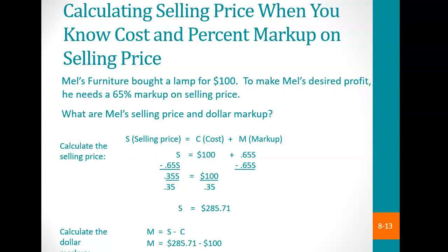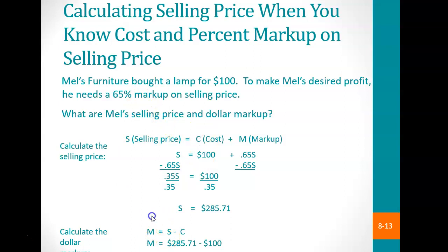The markup would be the selling price minus the cost. Taking the sales price minus the cost of $100, the markup on the lamp would be $185.71. This means you're paying a price much higher than what the lamp actually costs — the lamp only costs $100, but you're paying $285.71. The 65% markup is not based upon the cost; it is based upon the actual selling price.